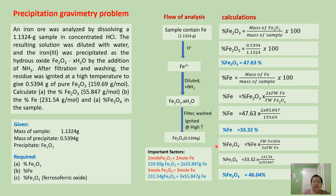Now let's proceed to the calculation of percent ferrozoferic oxide. Supposedly we calculate it as mass of ferrozoferic oxide over mass of sample times 100, but the mass of ferrozoferic oxide is not given. So we calculate percent ferrozoferic oxide from percent iron using a conversion factor. The formula is percent iron times the molar mass of ferrozoferic oxide over 3 times the molar mass of iron. Substituting the values, we obtain percent ferrozoferic oxide equal to 46.04%.